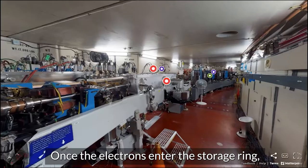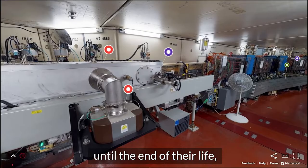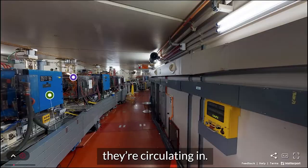Once the electrons enter the storage ring, they circulate for hours until the end of their life, which usually ends once they bump into each other or the surface of the chamber they're circulating in. What are the conditions like inside the chamber anyway?